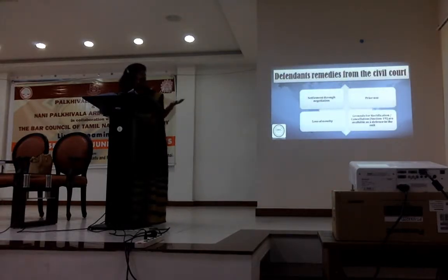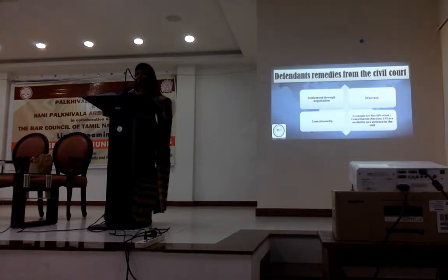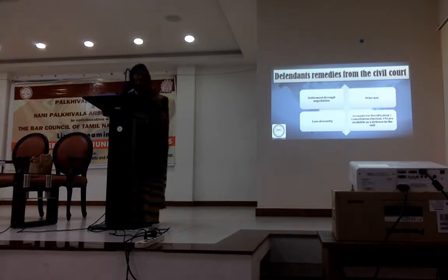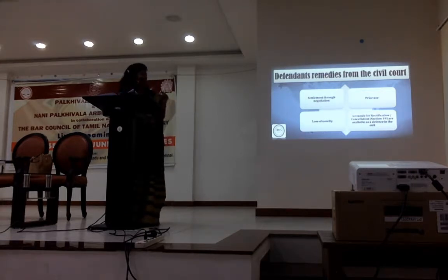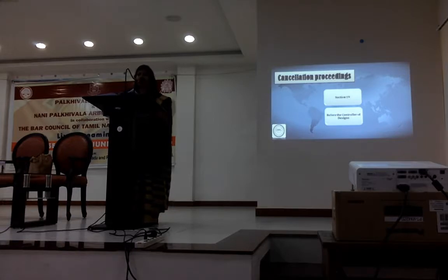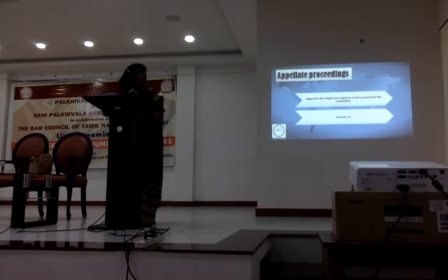The defendant's remedies are settlement, prior use, or loss of novelty — for instance, if the applicant already sold it for three weeks before filing, or if someone in Australia had already done it, the novelty is gone. You can take any of the grounds for cancellation of design under Section 19 of the Designs Act as a defence in your suit. Cancellation proceedings are under Section 19 and can be done only at Kolkata before the Comptroller of Designs. An appeal lies to the High Court under Section 36.